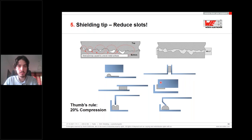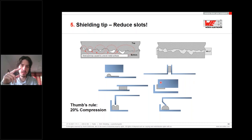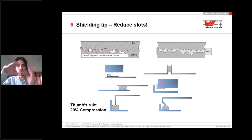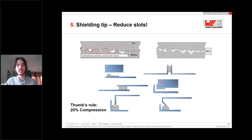An important rule about EMC gaskets: the gasket should always be compressed around 20% of its original height. This creates a full connection between the top and bottom layers — the gasket is gripped and compressed so that it makes a complete connection over the entire contact surface.